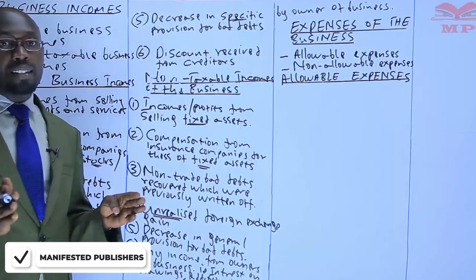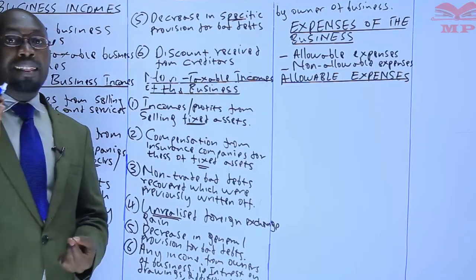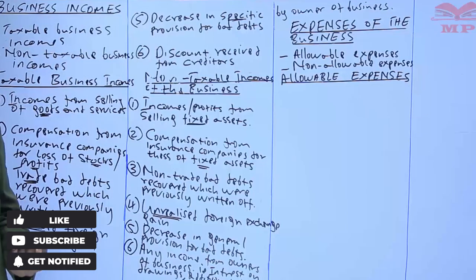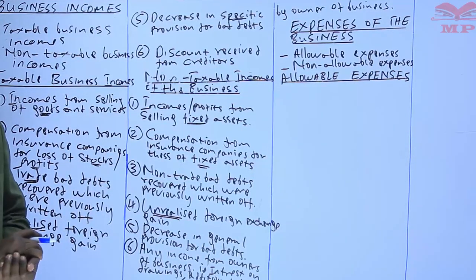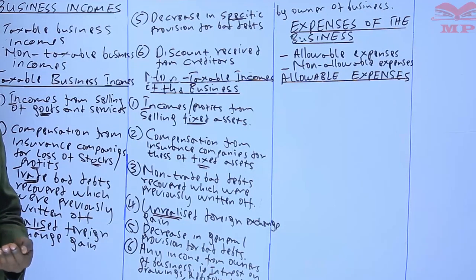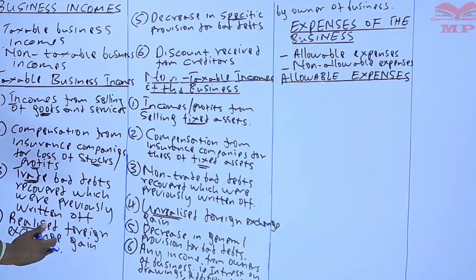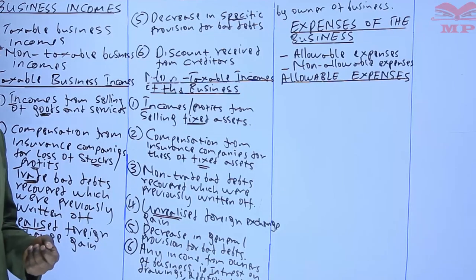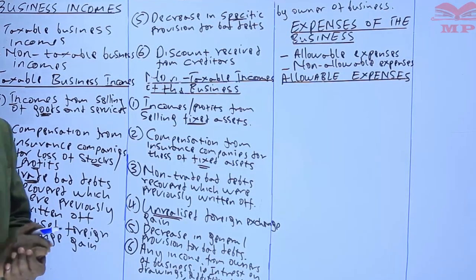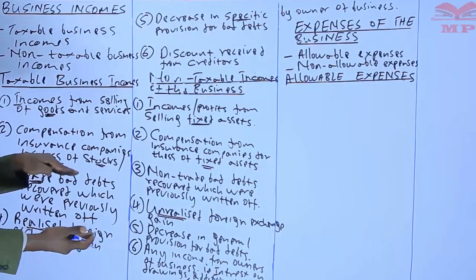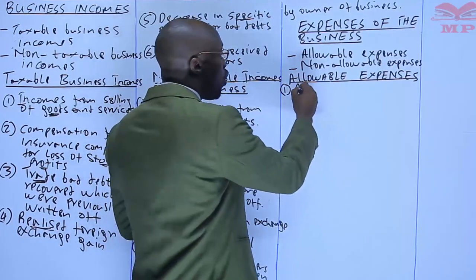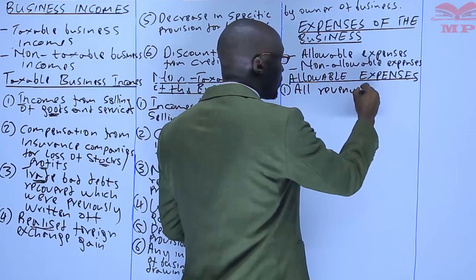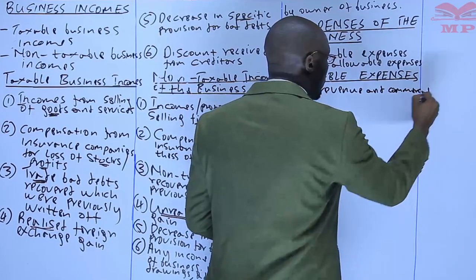First of all, what are these allowable expenses of the business? These are the expenses which the taxman, according to the Income Tax Act, allows you to deduct against the taxable incomes of the business. When you look at the gross profit method, once you get the gross profit of the business for a trading business, you normally add the taxable operating incomes and then deduct the allowable business expenses, which reduce the amount of profit to be taxed. We start with number one: revenue and commercial expenses of the business.